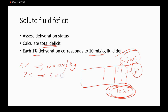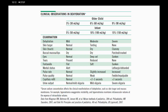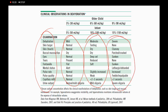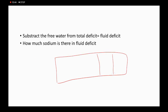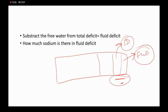To assess dehydration clinically, there are mild, moderate, and severe categories. For older children, these correspond to 3%, 6%, and 9% dehydration respectively. For infants, it is 5%, 10%, and 15% respectively. Total deficit is calculated using percent dehydration, free water deficit is calculated using the formula, and solute deficit = total deficit minus free water deficit.